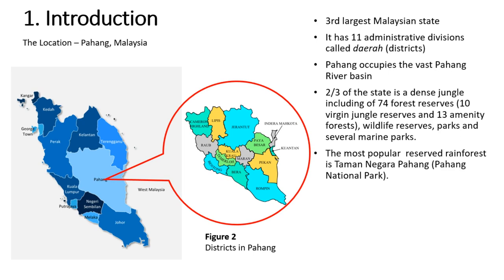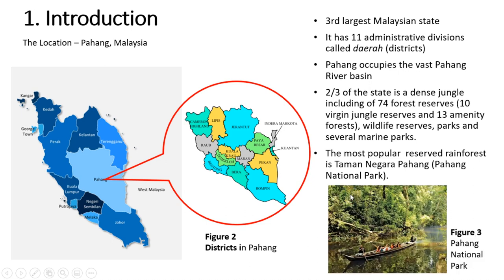Pahang occupies the largest Pahang River Basin in Malaysia, and two-thirds of this state is covered with dense jungle, including 74 forest reserves, 10 virgin jungle reserves, and 13 amenity forests. It also has wildlife reserves, parks, and several marine parks. The most popular reserve rainforest is Taman Negara Pahang, or Pahang National Park, as you can see from this picture.